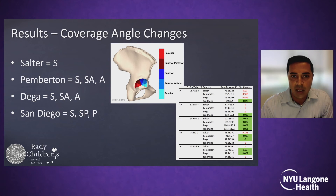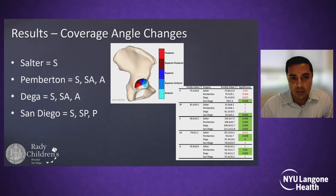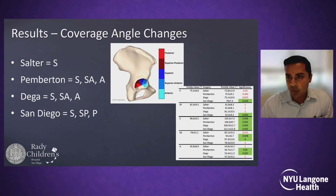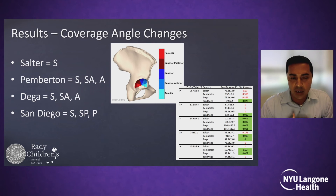With the Salter osteotomy, we found the most coverage directly superior. With the Pemberton and Dega osteotomies, we got the most coverage superior, superior-anterior, and anterior. And with the San Diego osteotomy, performed in the traditional published version, we got the most coverage directly superior as well as in the posterior segments.